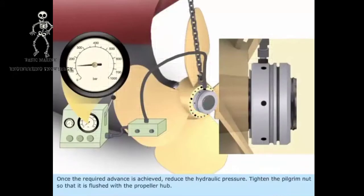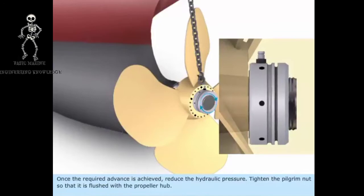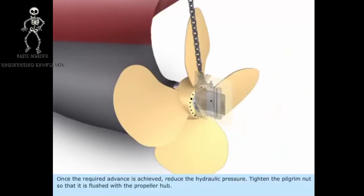Once the required advance is achieved, reduce the hydraulic pressure. Tighten the pilgrim nut so that it is flushed with the propeller hub.